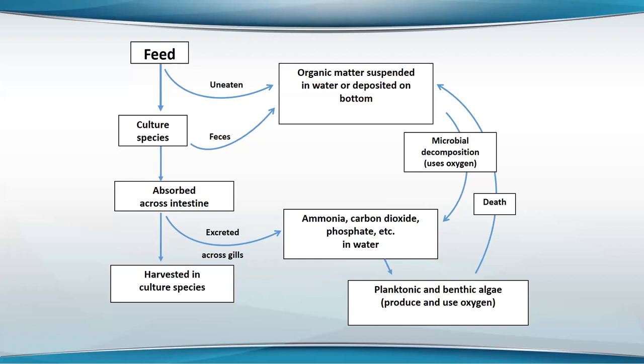The remainder is absorbed across the intestine and then a lot of that is excreted as ammonia and CO2 across the gills, and only a portion of it ends up harvested in the culture species. Of this waste that goes into the water, one portion came from the uneaten feed and is still in the form of organic matter, so it's broken down by bacteria. The part excreted by the fish is mainly ammonia, CO2, phosphate, and a few things like that.